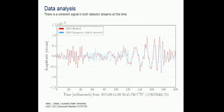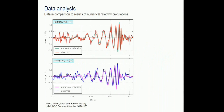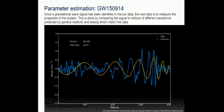Flipping the sign of one detector (their orientations differ) and shifting by the observed 7-millisecond delay between the two LIGO detectors shows the signals fall nicely on top of each other. You can then compare to numerical relativity solutions for binary merging systems: changing the distance changes the amplitude; changing the mass shifts the frequency. Folding in the sensitivity curve, the numerical relativity solutions start explaining what is seen.